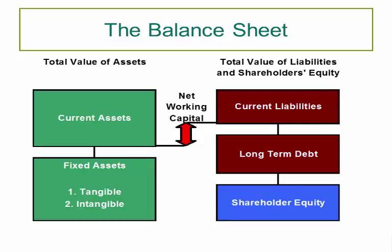Tangible assets are real, physical assets you can touch and put a price on — for example, a UPS company might have trucks, airplanes, and warehouses. Intangible assets, however, are harder to pin down. Examples include trademarks and patents. Think of Microsoft's Windows trademark, Coca-Cola Classic, Nike's swoosh, the Air Jordan silhouette, or the Texas Instruments logo on your calculator. All of these are trademarks that companies have assigned value to and that may appear on the balance sheet.